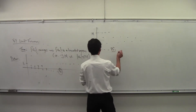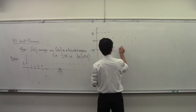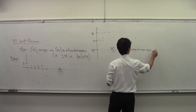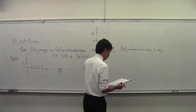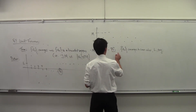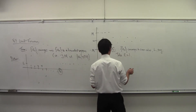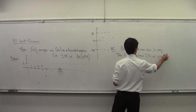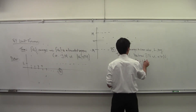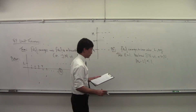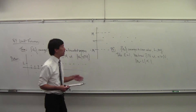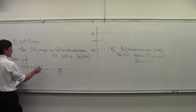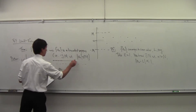Let me do the proof. Assume a sub n converges to some value L. Take an epsilon of 1. We know there exists an N such that if you pass that N, then |a sub n minus L| is smaller than 1. So the distance from L is smaller than 1. Here's L+1 and L−1, and we know that past some point, everybody is between those two lines.